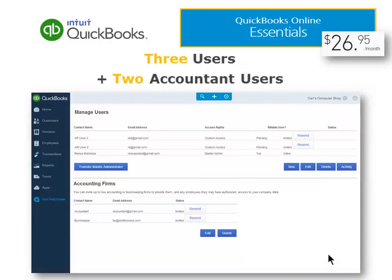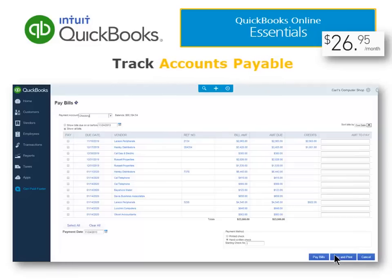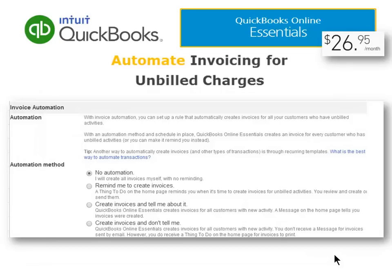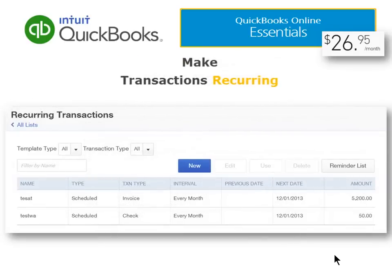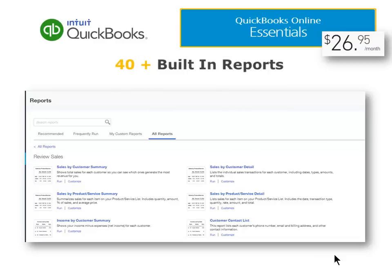QuickBooks Online Essentials Edition is the next option. This is for clients who are up and running and need additional features. The base price for Essentials is $26.95 per month, and that includes up to three users plus two accountant users. There is no charge for the accountant users in any edition. In addition to all the features of Simple Start, you can also track accounts payable with the Essentials Edition. You can automate invoicing for unbilled charges — as long as charges have been entered using the Delayed Charges option, QuickBooks Online can automatically create and send out the invoice on a schedule of your choosing. Recurring transactions is another great feature of the Essentials Edition; you can set invoices and expenses to post on a recurring schedule. Essentials includes over double the number of built-in reports that Simple Start has.